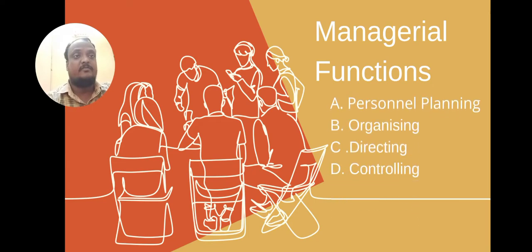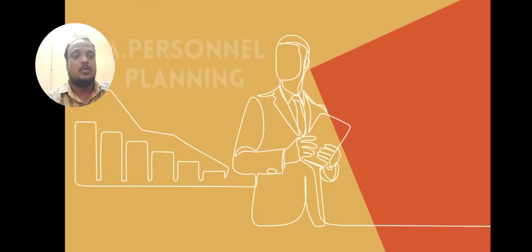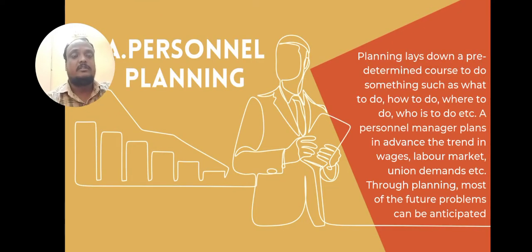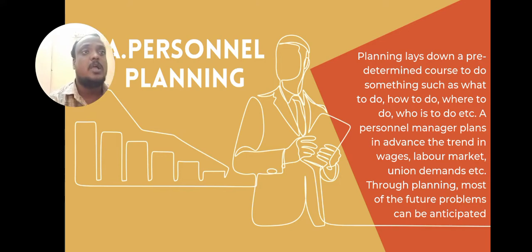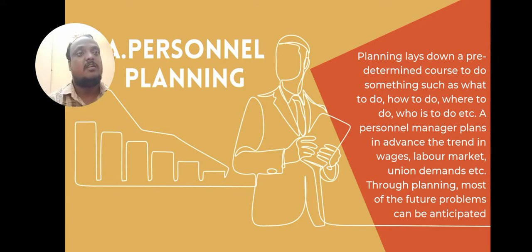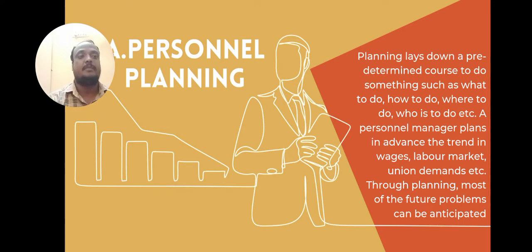The four types of managerial functions are: planning, organizing, directing, and controlling. First, personal planning — it is predetermined course of action determining what to do, how to do, where to do, and who is to do. A personal manager plans in advance the trend in wages.